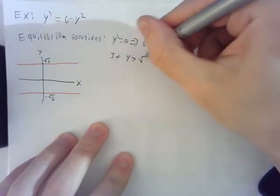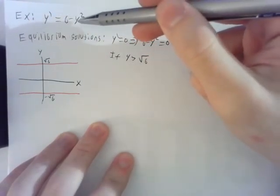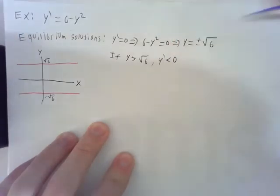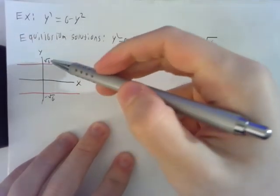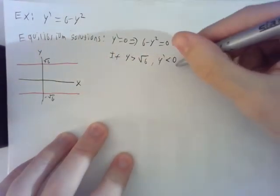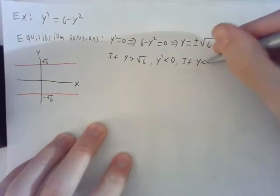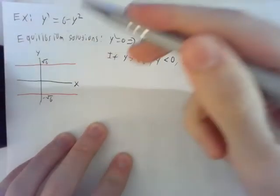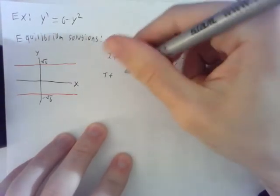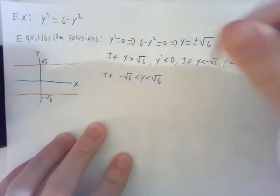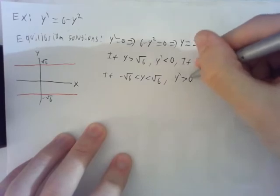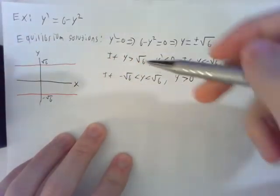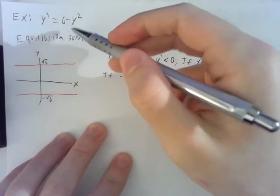Well, if y is greater than the square root of 6, that means that when we square it, we're going to be a number bigger than 6 that we're subtracting off. So from our differential equation here, y prime is going to have to be negative. So that means that when we start off above square root 6, the solution is decreasing. The same thing happens if y is less than negative square root of 6, because it doesn't matter whether the sign is positive or negative since we're squaring it. If y is in between these two values, then we have y prime is positive, because then when we square y, it will be less than 6. So 6 minus that number will be a positive thing. So all this information can be determined just from this differential equation without actually solving anything.